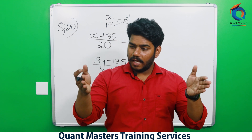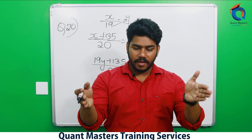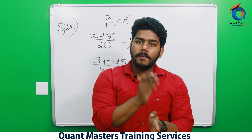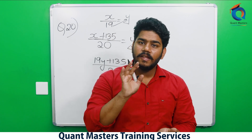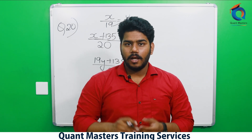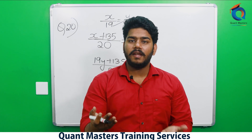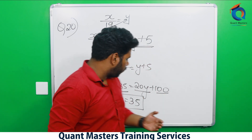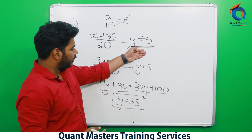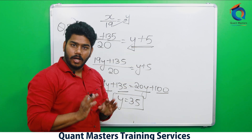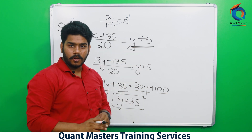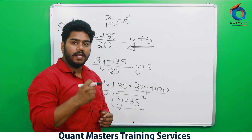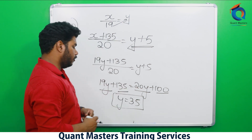He scored 135 in the 20th innings, of which 100 runs were extra. The remaining 135 - 100 = 35 was his initial average. Since the average increases by 5, his final average is 35 + 5 = 40 runs. Please take note of the concept for a better grip on these techniques.